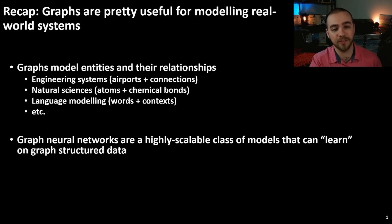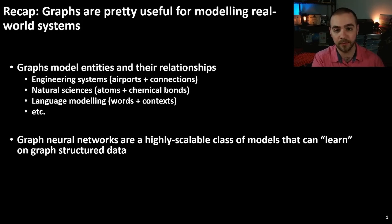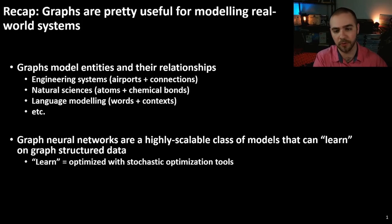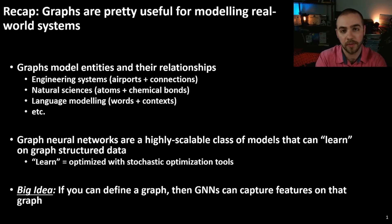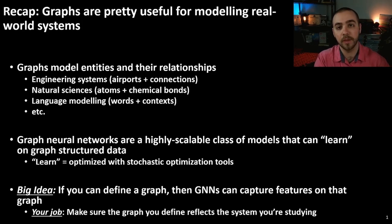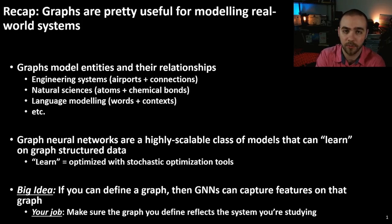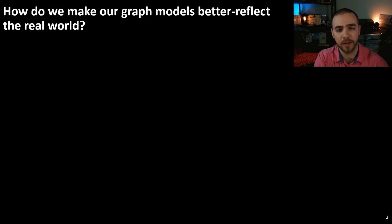Graph neural networks are a highly scalable class of models that can learn on graph-structured data, which allows you to extract features automatically from these graphs — by learning, I mean optimizing these models with stochastic optimization tools using some type of loss function. The big idea is that if you can define a graph, then graph neural networks can capture features on that graph. However, this puts a big job in your hands: you have to make sure that the graph you're defining actually reflects the system you're studying. If you define an incorrect graph, you're just going to get nonsense out.